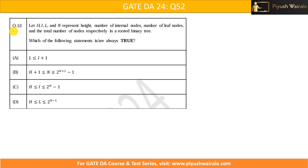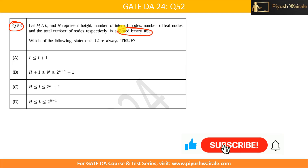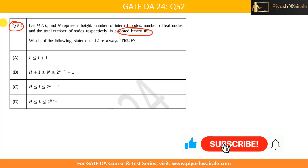Hello everyone. In this particular video, we are going to discuss question number 52 of the GATE DA24 exam. This question is based on binary tree. We already discussed in detail what is a binary tree, what is a binary search tree and what are the properties. Now let us try to solve this question.